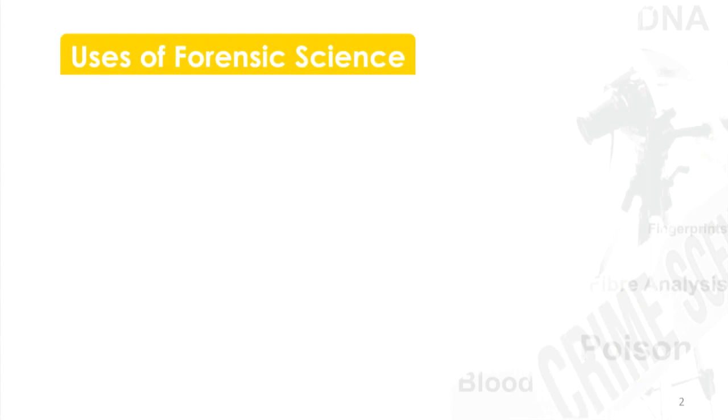We said that forensic science is the application of science to criminal justice, but the boundaries are not so firm. The boundaries are actually quite fuzzy, because many of the concepts and ideas of forensic science can also be used in other areas, in other fields. For instance, they can be used in art.